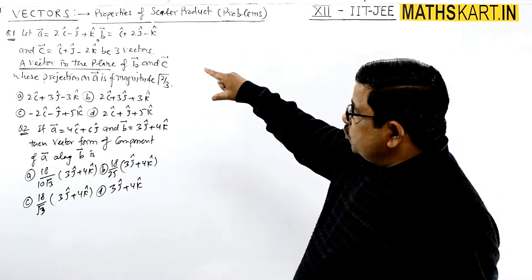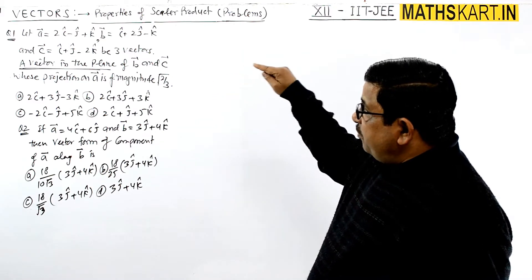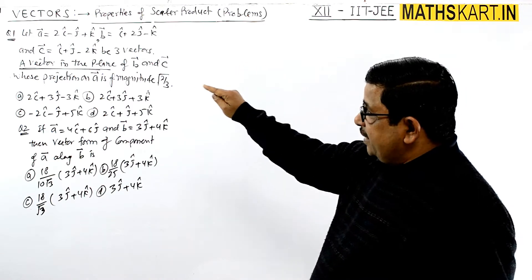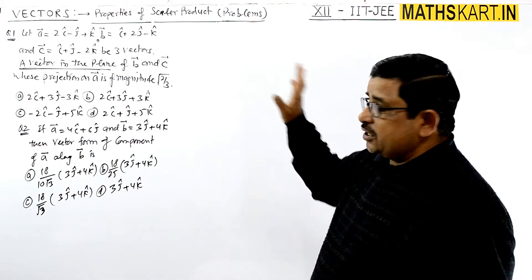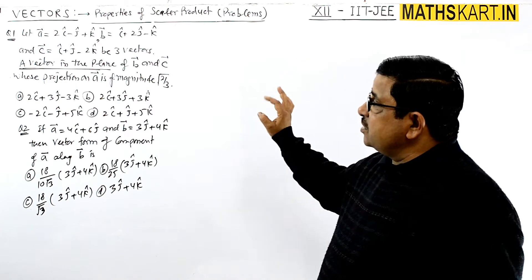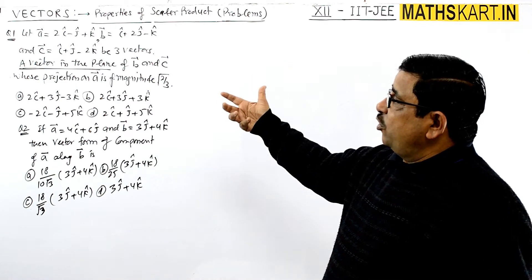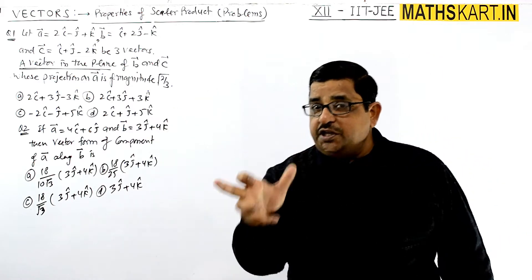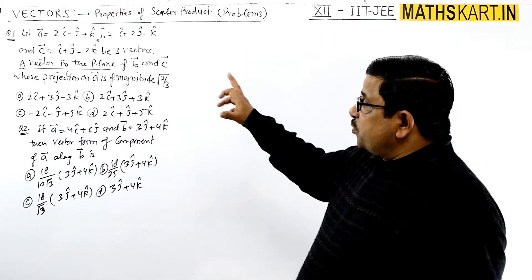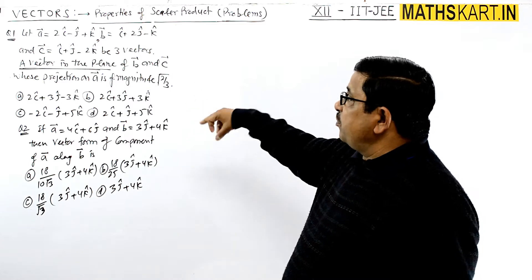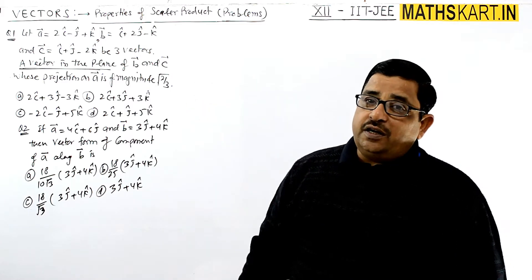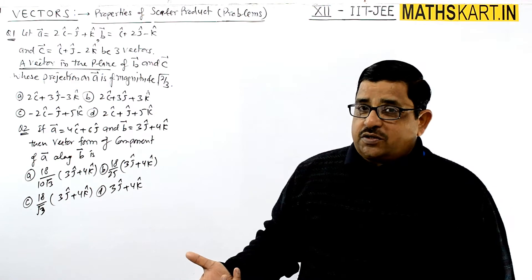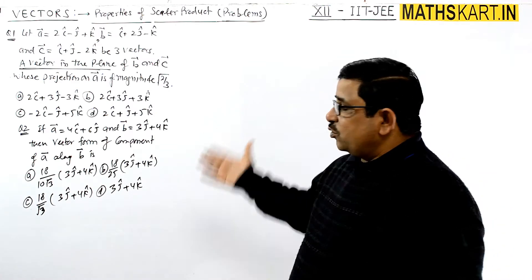Let a = 2i − j + k. b vector is given as i + 2j − k and c vector is i + j − 2k. With these 3 vectors, find a vector in the plane of b and c whose projection on a is of magnitude √2/3. So the projection is given as magnitude, and that has the magnitude √2/3.